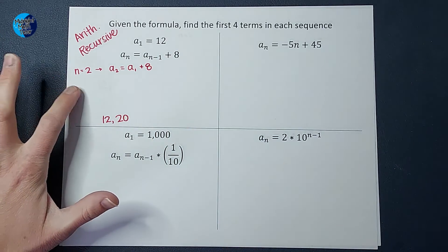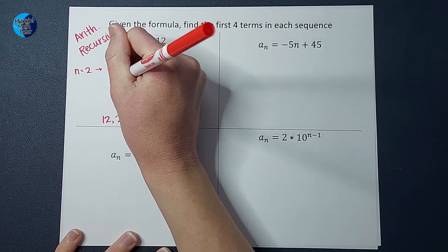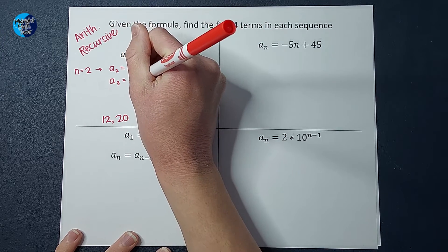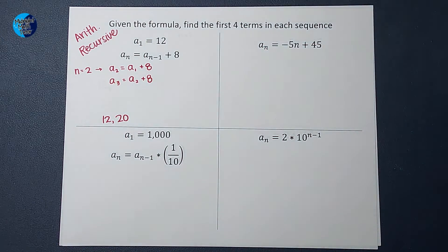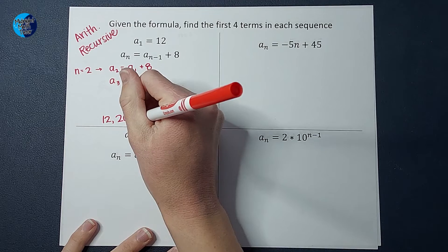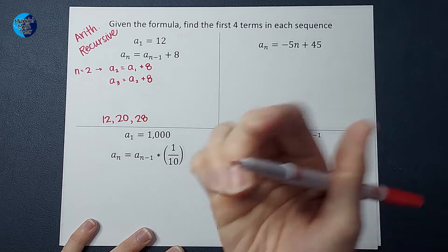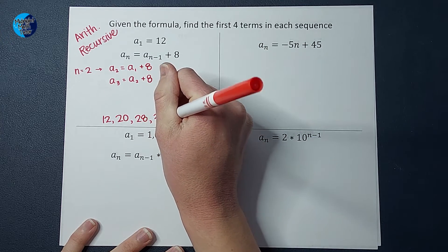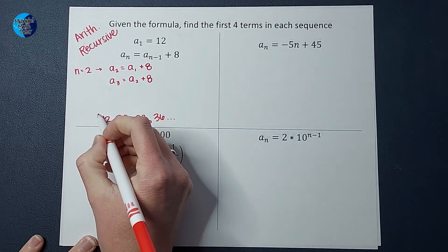Now I could plug in 3 if I wanted, but I know what that's going to give me. It's going to give me a sub 3 equals 3 minus 1, a sub 2 plus 8. So what this is telling me is I'm just adding 8 every time. So I'm going to add 8. If I plug in 4, it's going to tell me add 8 to the third one, which will give me 36. And as always, I could keep going, but it just wants the first 4. So there we go.